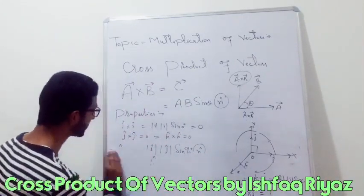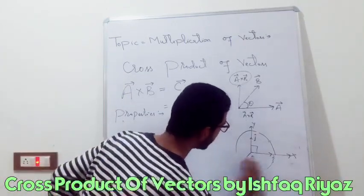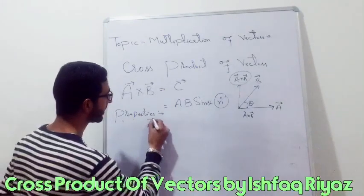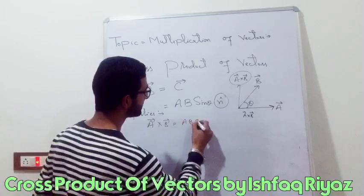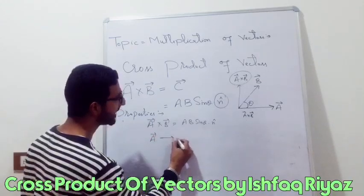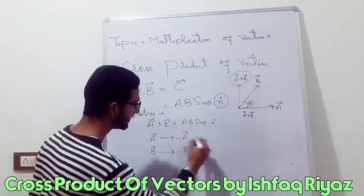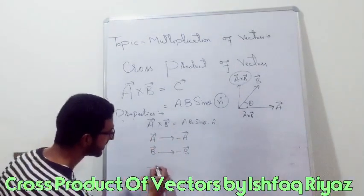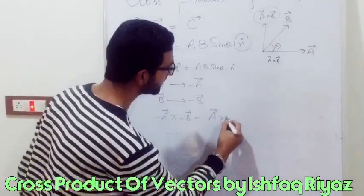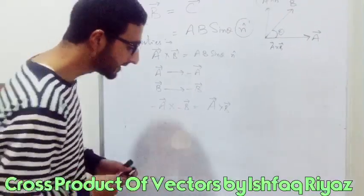One more property: the cross product of vectors does not change under reflection. This means if I change vector a to minus a and vector b to minus b, then (−a) cross (−b) equals a cross b. That is, the cross product does not change under the reflection operation.